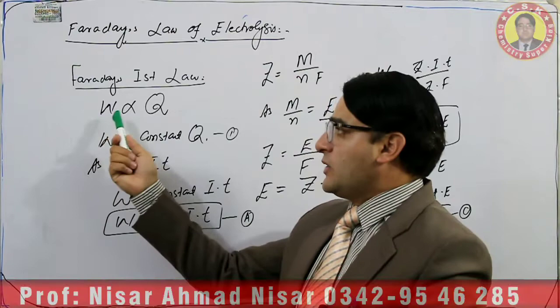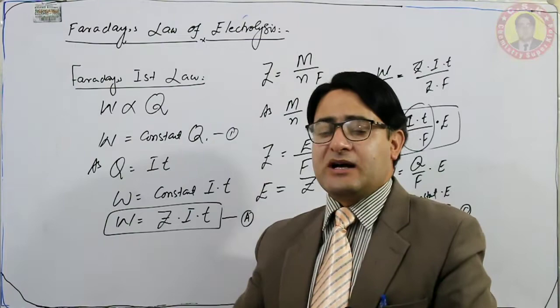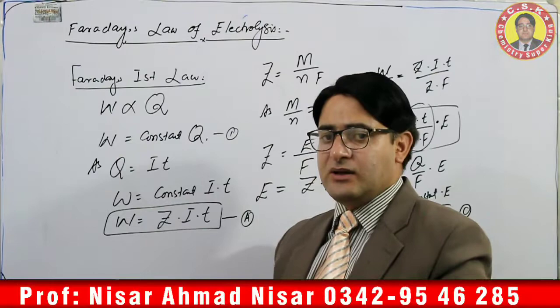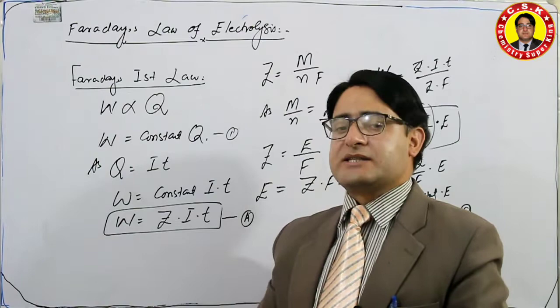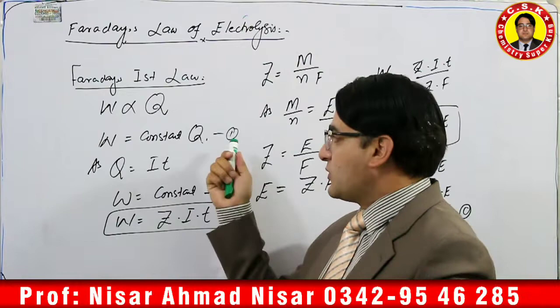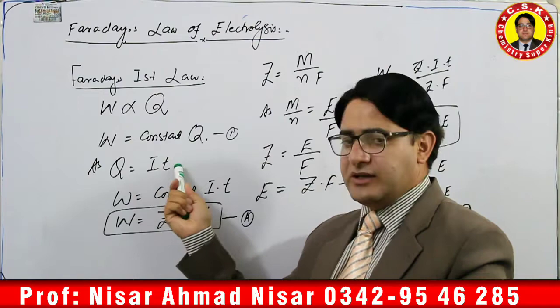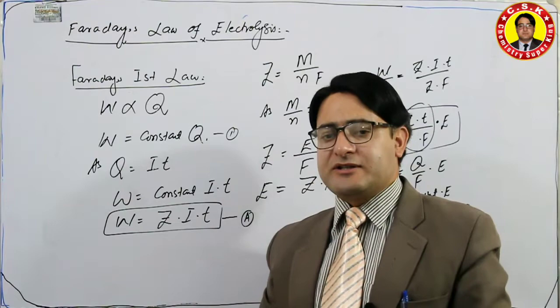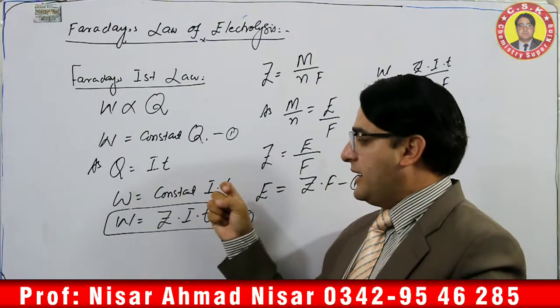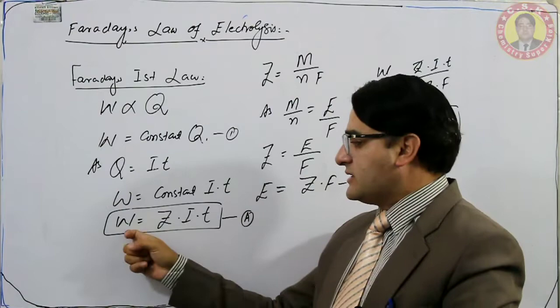Mathematically we can write: W is directly proportional to Q, where W is the amount of substance deposited or liberated at the electrode, and Q is the quantity of electricity. When we remove the proportionality sign and introduce a constant, we get W = constant × Q (Equation 1). Since quantity of electricity Q = I × T, where I is current in amperes and T is time in seconds, Equation 1 becomes W = Z·I·T, where Z is the constant.